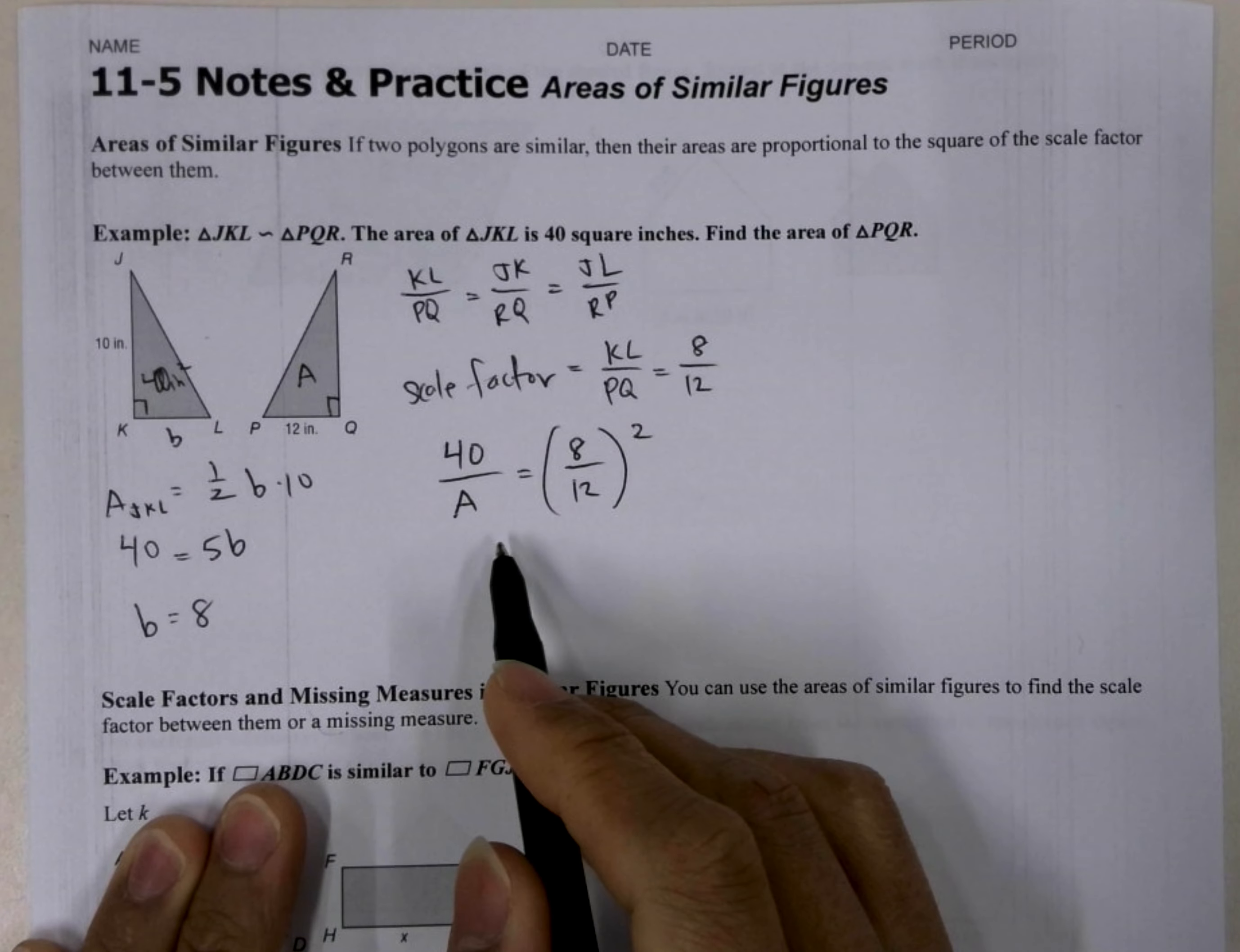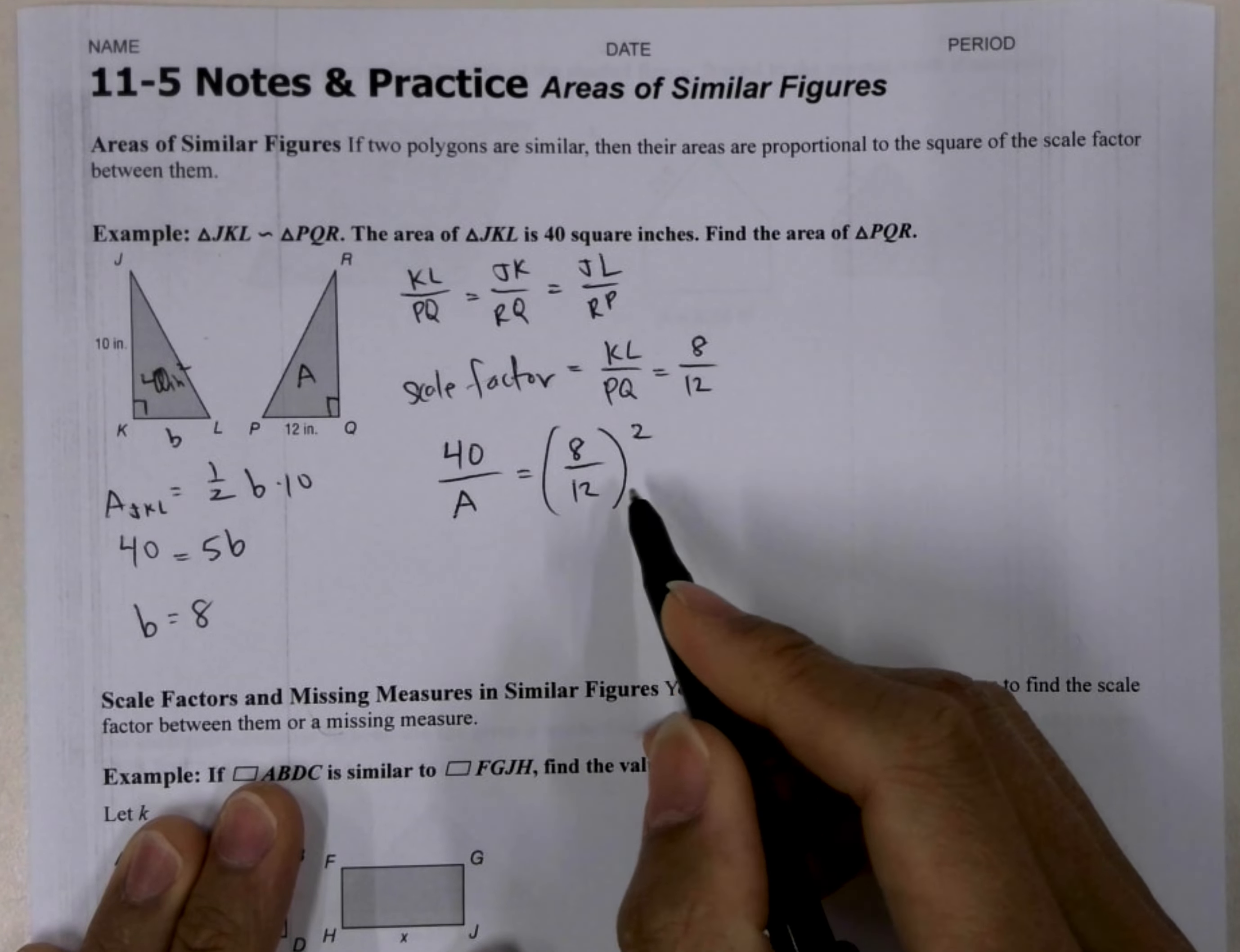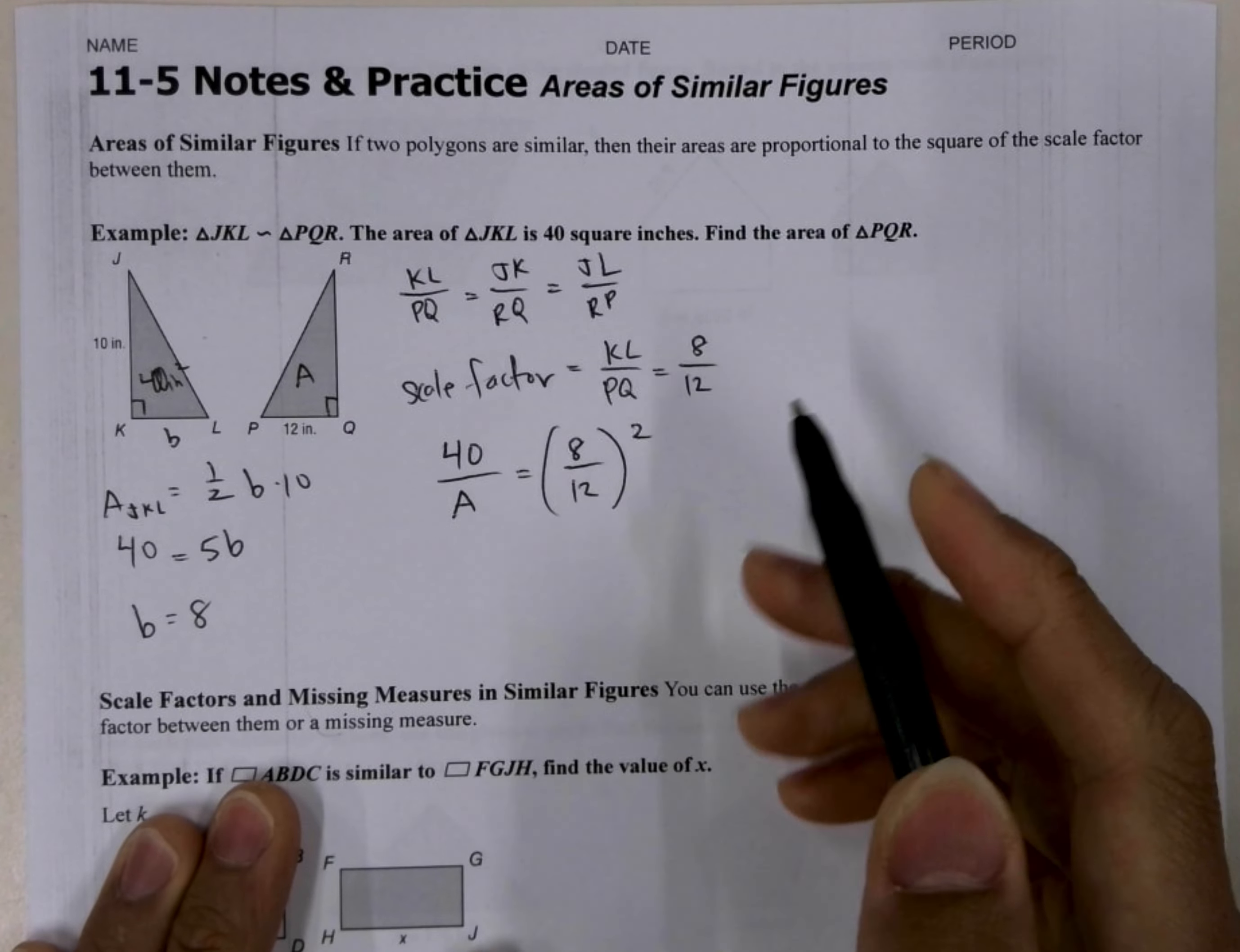But first, you need to remember the power of a quotient. How do we do it? Well, the power gets distributed to the numerator and the denominator. You've got to remember that.